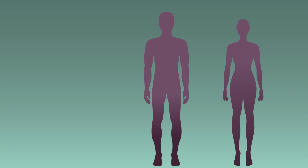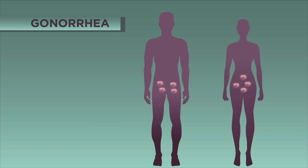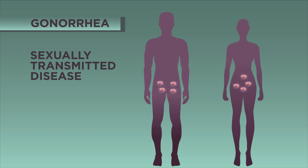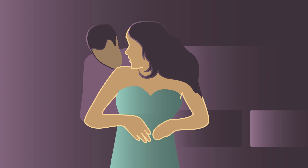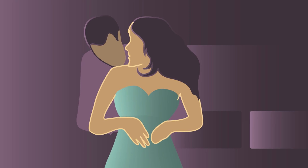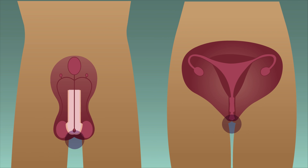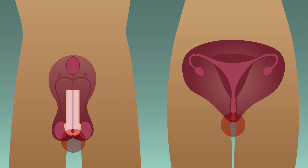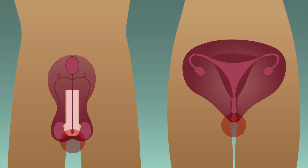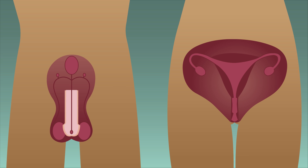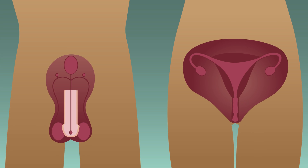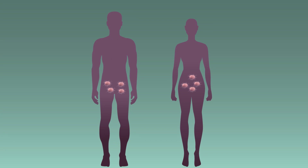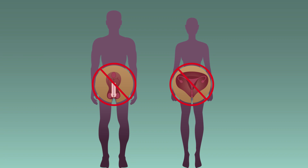Another infectious disease caused by bacteria is gonorrhea. This is a sexually transmitted disease, or STD for short. It is passed from person to person by sexual contact. The early symptoms include a thick yellow or green discharge from the vagina or penis, and pain on urination. The symptoms become less obvious in the later stages of illness, so it can go undetected.